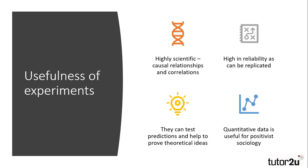Experiments are useful in the social sciences for a number of reasons. Firstly, they are highly scientific and establish causal relationships and correlations which can be used to formulate theories about human behaviour. They are high in reliability as they can be repeated and results tested, allowing scientists to prove or disprove theoretical ideas. The use of quantitative data, preferred by positivist sociologists, allows for objective judgments to be made. However, critics would suggest that even quantitative data can be interpreted subjectively.